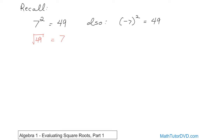The concept of squaring something goes this direction, and the concept of taking the square root of something goes the other direction. When you take the square root of a number, you're trying to find out what number times itself will give you this number underneath the square root, also called the radical. So this is called a radical.